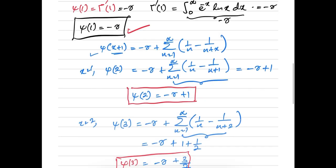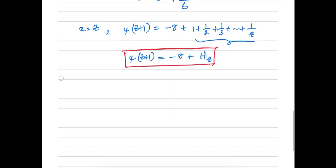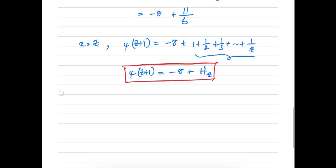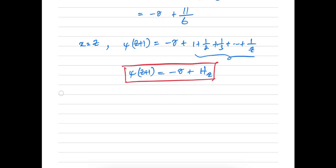This is the relation between the digamma function and the harmonic number. For example, ψ(8) = -γ + H_7, the 7th harmonic number. Thank you for watching.